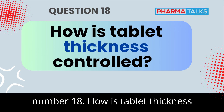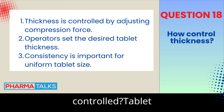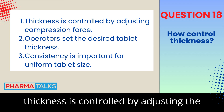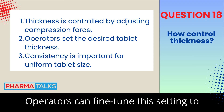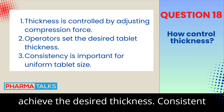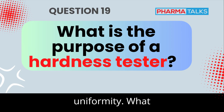Question 18: How is tablet thickness controlled? Tablet thickness is controlled by adjusting the compression force during tablet pressing. Operators can fine-tune this setting to achieve the desired thickness. Consistent thickness is important for product uniformity.